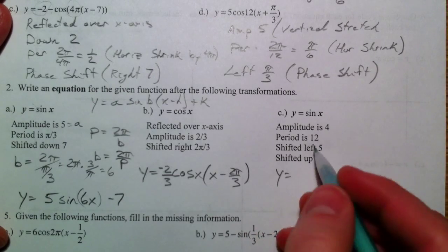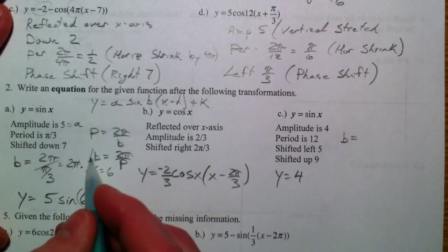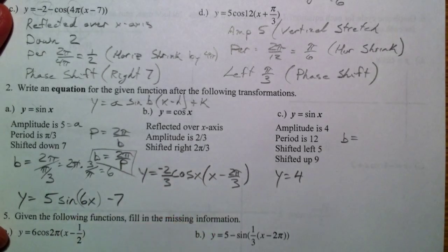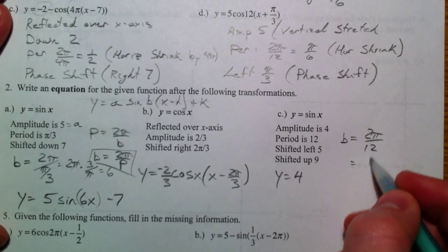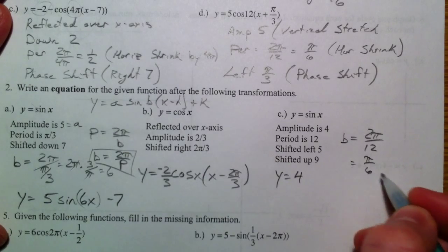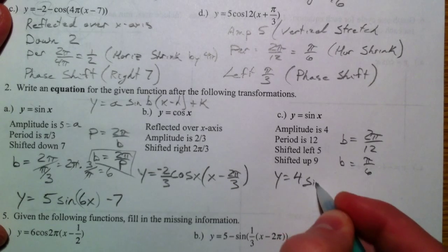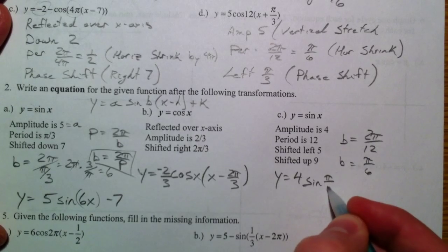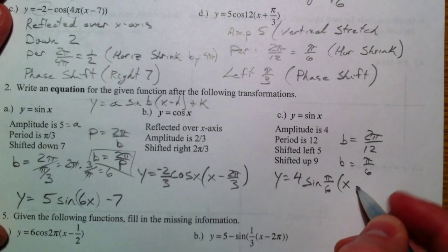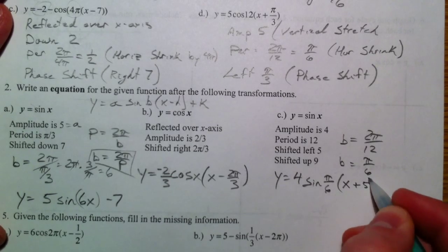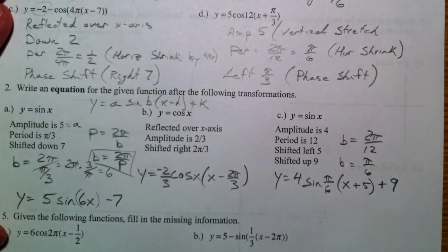And y equals sine of x. Amplitude is 4. Period is 12. So we're going to do the b, just like we did before. 2 pi divided by 12. Pi over 6. And so the pi over 6 is our b. y equals 4 sine of pi over 6. We're going to be shifting it left 5. So left, I would think minus, but it's actually plus because it's opposite. And up 9. Plus 9. And there you have it.